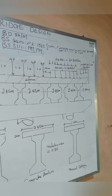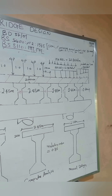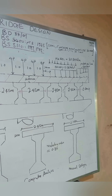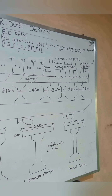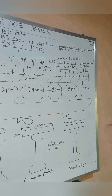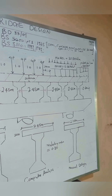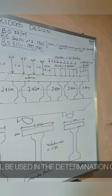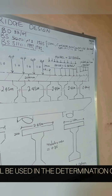Having seen the loadings of the deck, the point loads, and the UDL, the next step is to calculate the moment of inertia of the I-section. After that, we will calculate the moment of inertia of the composite section especially for manual design. Next, we will calculate the moment of inertia of the cross beam or diaphragm at the support of the deck.